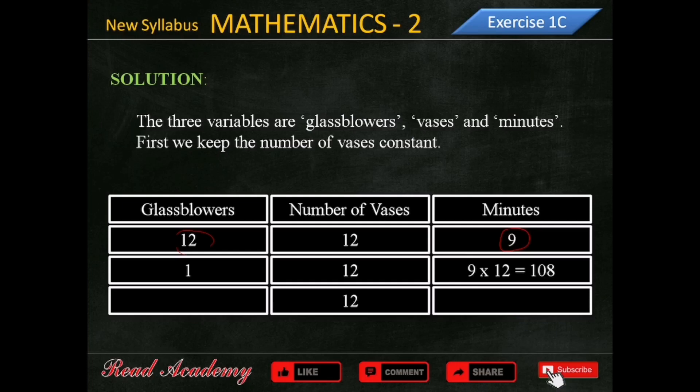Now, how long will 8 glassblowers take to make 12 vases? Since the number of glassblowers has increased, the time will decrease. So we'll divide 108 by 8 and the result is 13.5.